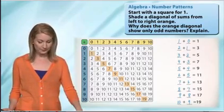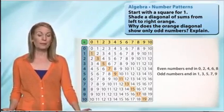Let's review. Remember, even numbers are numbers that end in the values zero, two, four, six, or eight. Odd numbers are numbers that end in one, three, five, seven, and nine.